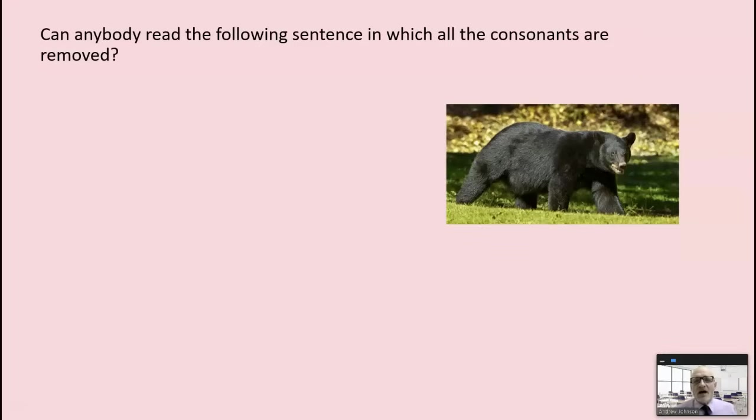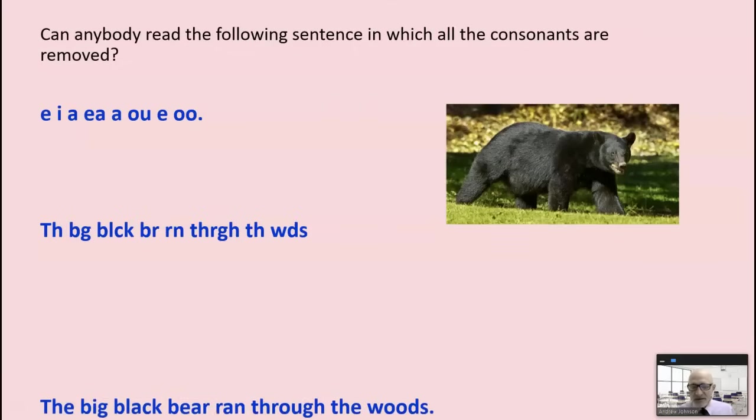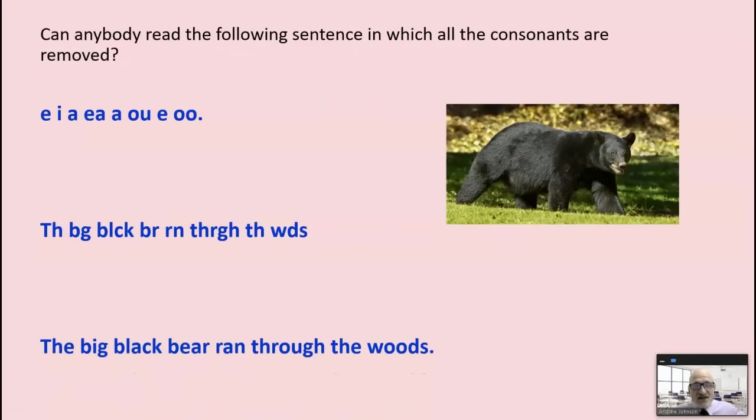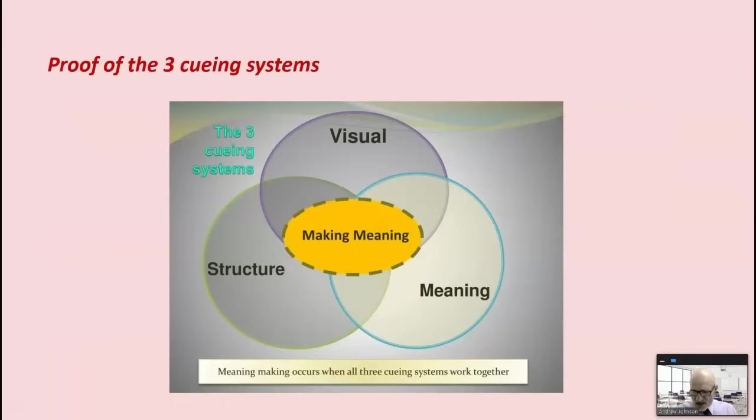Now, here's something. I'm going to give you a sentence that's about bears and the woods in which all the consonants are removed. Now, if vowels are so gosh darn important, you would be able to read that sentence without any consonants at all. But you can't, I would imagine. Now, same sentence with all the vowels removed. Most of us could say, oh, the big black bear ran through the woods or something like that because the consonants and the context and grammar and word order are much more important than individual vowel sounds, which are not very important at all.